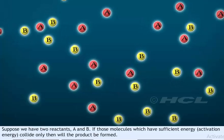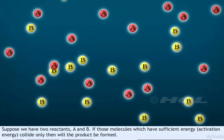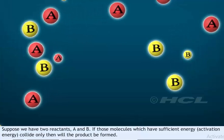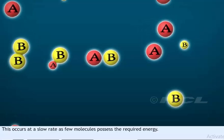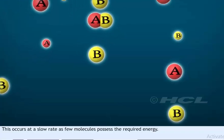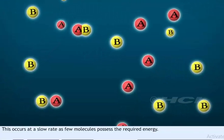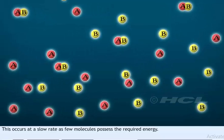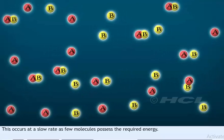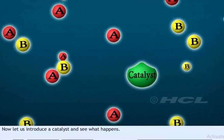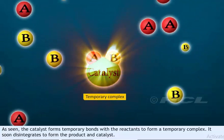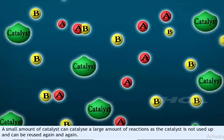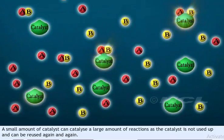Suppose we have two reactants A and B. Only molecules with sufficient activation energy that collide will form the product, and this occurs at a slow rate as few molecules possess the required activation energy. When a catalyst is introduced, it forms temporary bonds with the reactants to form a temporary complex, which soon disintegrates to form the product and the catalyst. A small amount of catalyst can catalyze a large amount of reactions as the catalyst is not used up and can be reused again and again.